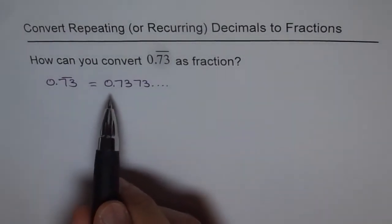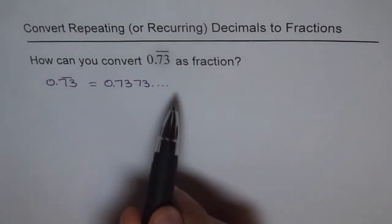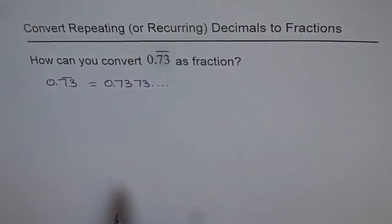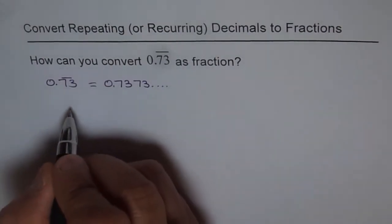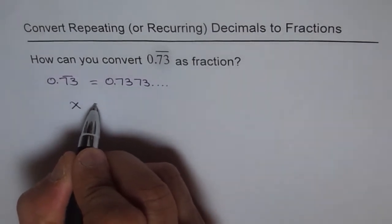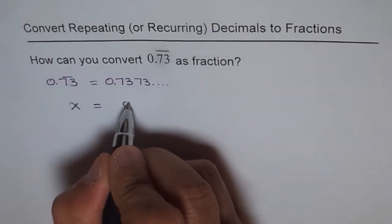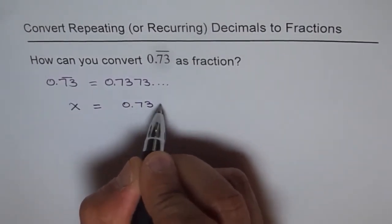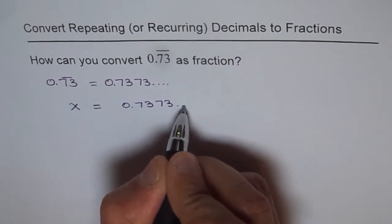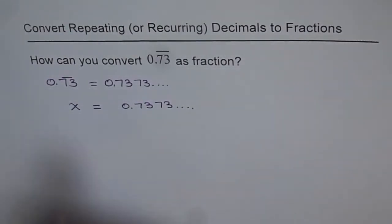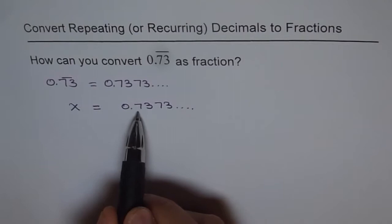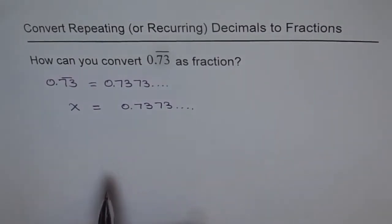So let it be x, we'll always start with x unknown. So x equals 0.7373... and so on. Now the idea is to get rid of 7373 after the decimal.